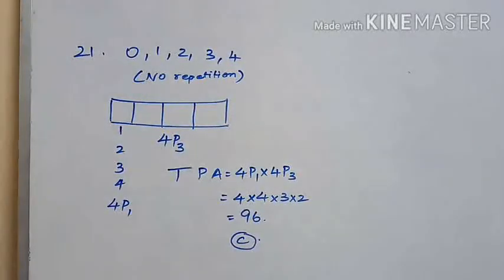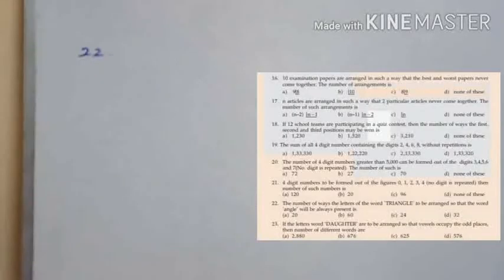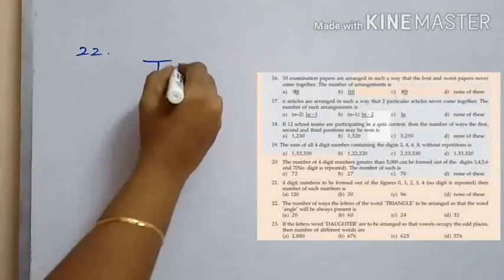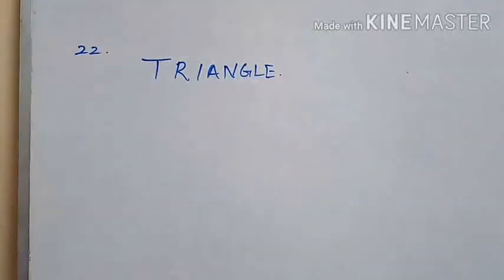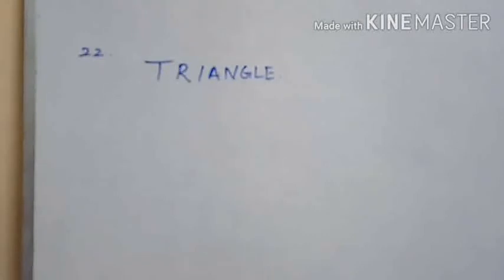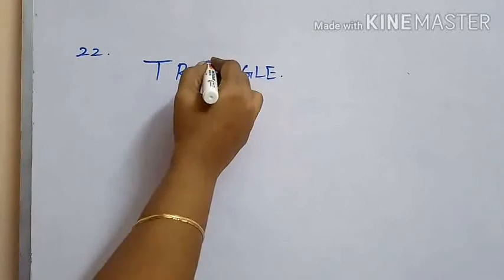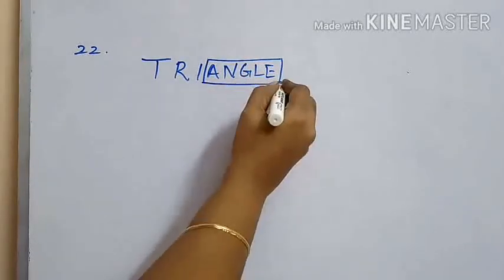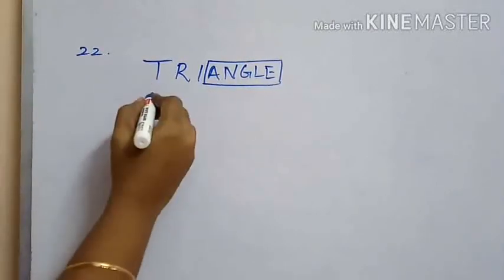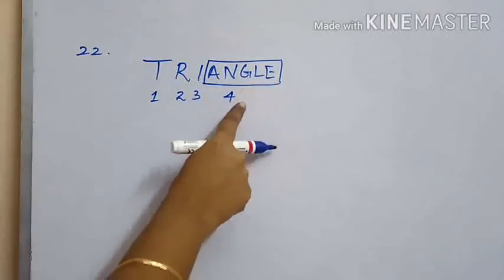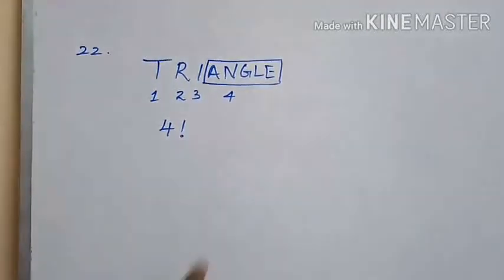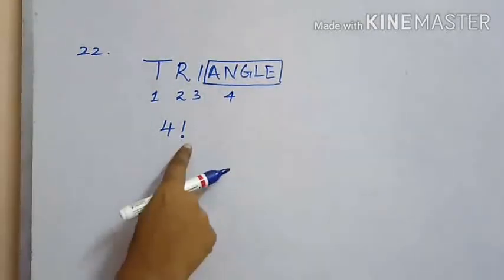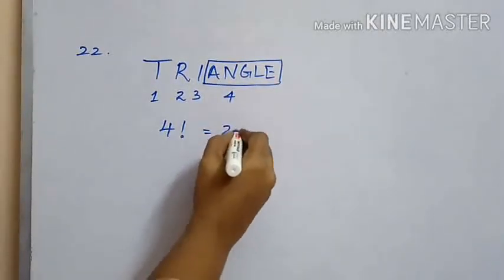Question 22: the number of ways the letters of the word TRIANGLE can be arranged so that the word ANGLE is always present. The word ANGLE can be considered as one group of 5 letters, and the rest of the 3 letters form 3 separate groups, giving 4 groups altogether arranged in 4 factorial ways. Since ANGLE never changes its internal position, the total number of arrangements is 4 factorial, which is 24. Option C is the answer.